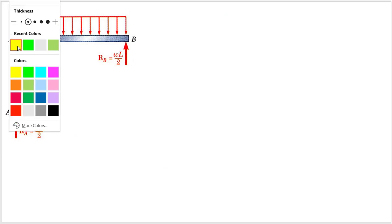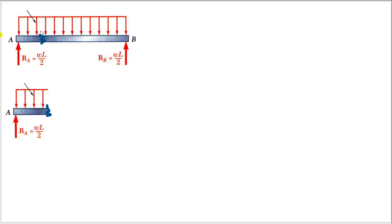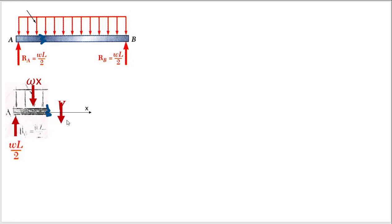Once we have what's happening at the edge, the next piece is to carve through and start thinking about what's happening as we walk through the beam. We'll define a coordinate system, measuring the distance from the end and calling that x. As we walk through it, our shear is going to have to balance all the Y forces. We have omega L over 2 at the end, and then as we get farther and farther into it, this distributed load on top gets larger and larger until halfway through it will cancel out what is happening at the edge.